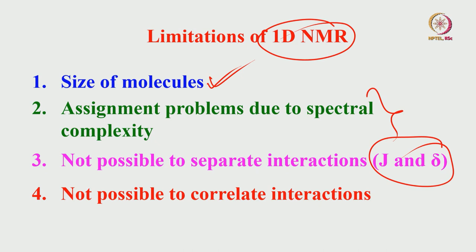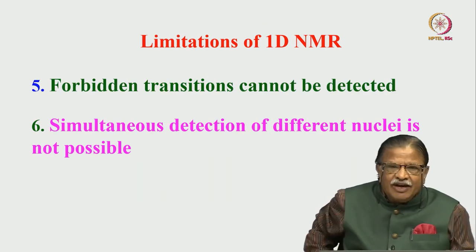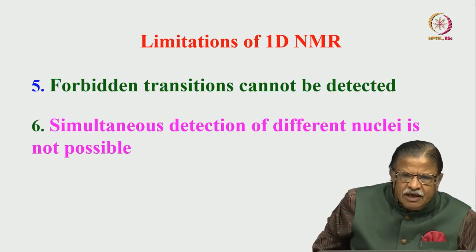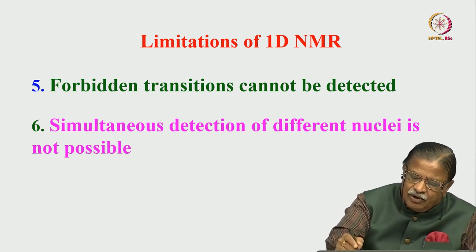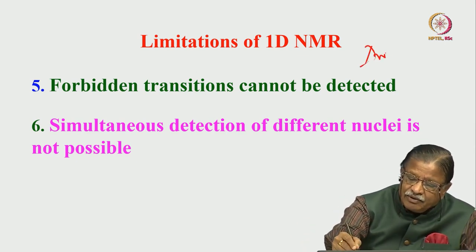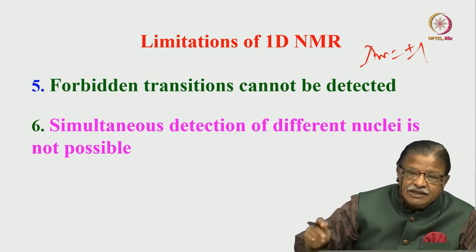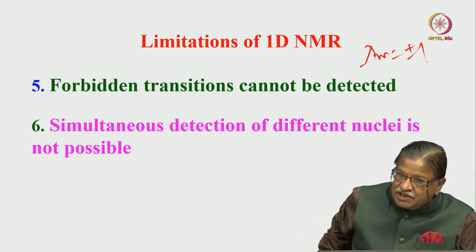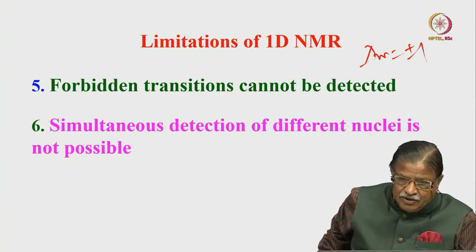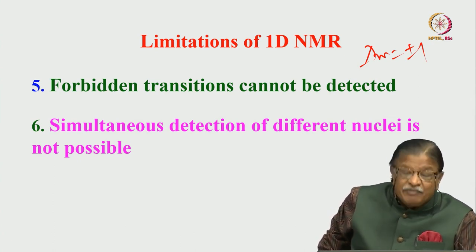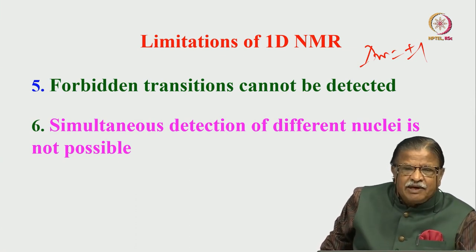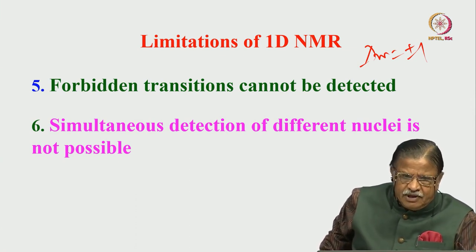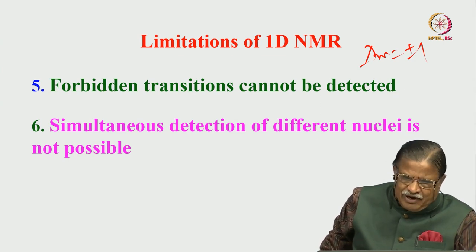These are some of the practical limitations of 1D NMR. In addition, there are forbidden transitions which you cannot detect in 1D NMR. The selection rule is delta m equals plus or minus 1. The change in magnetic quantum number between two spin states must be either +1 or -1. Anything above that or at 0 are called forbidden transitions in NMR — you cannot detect them.